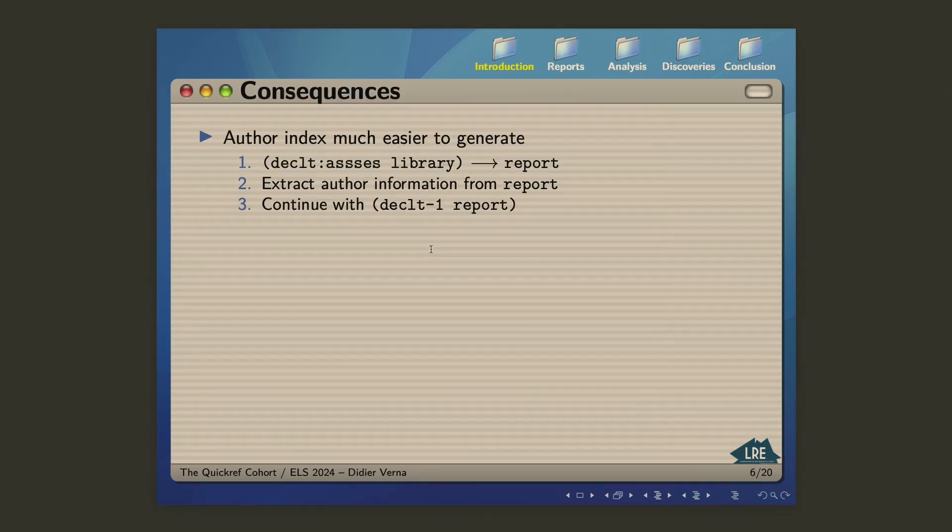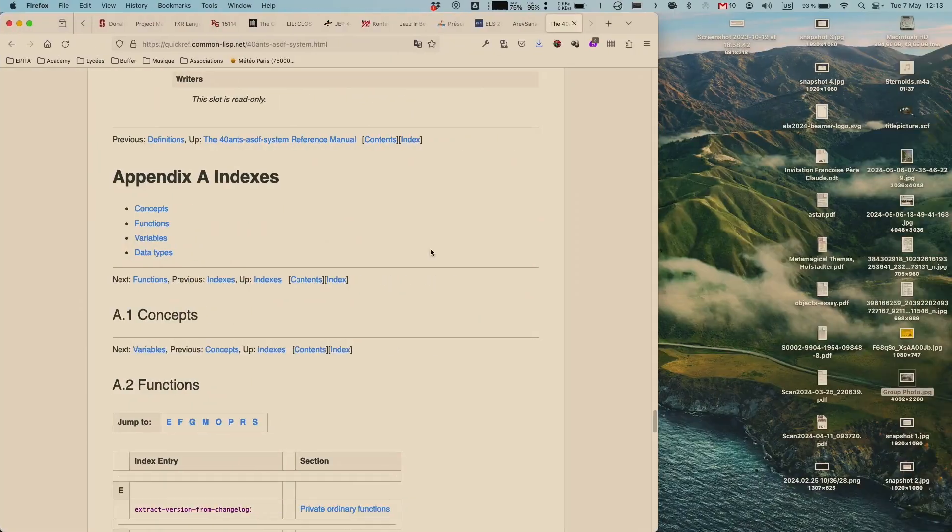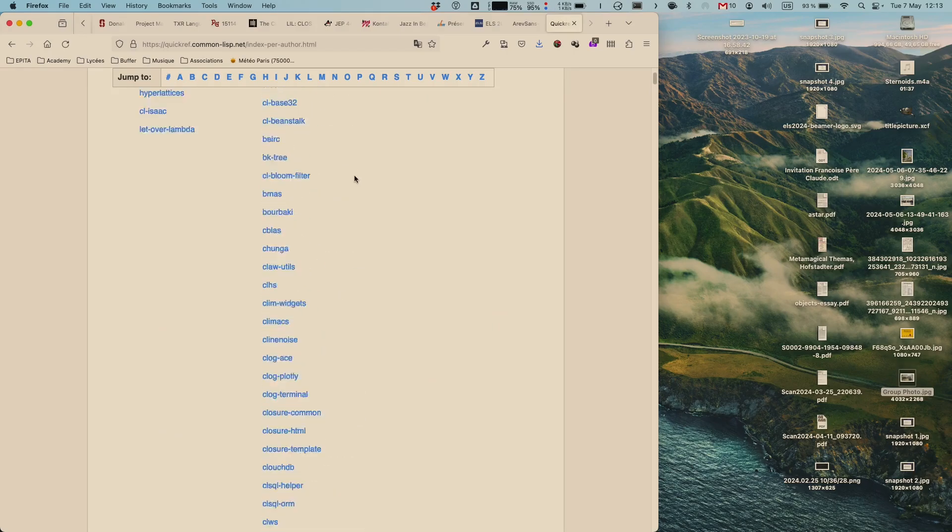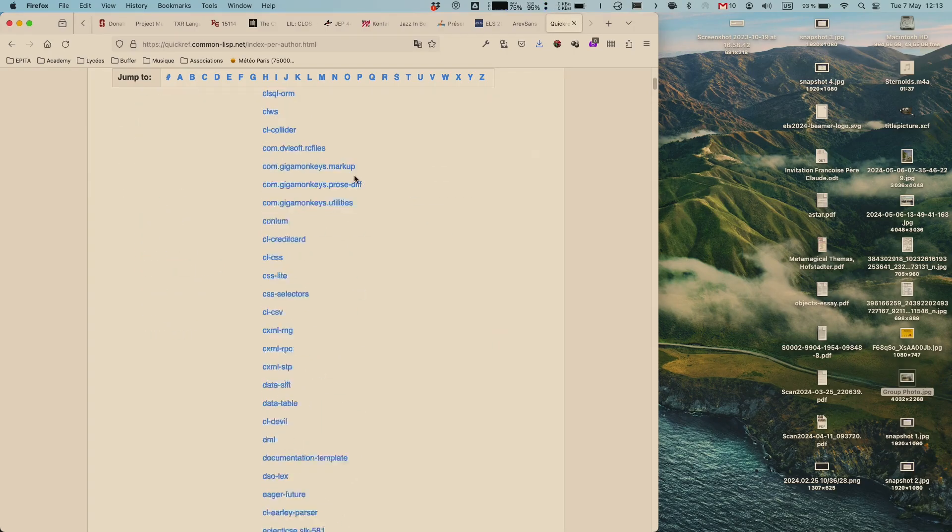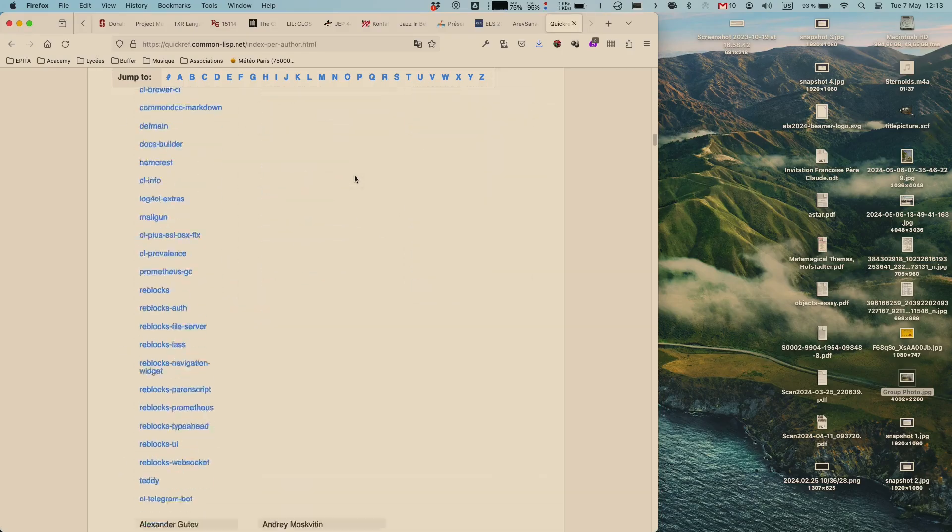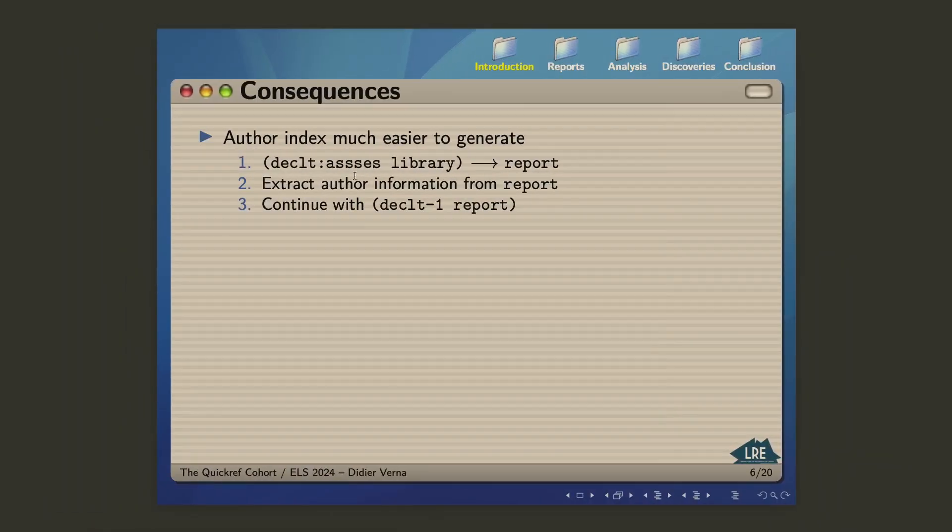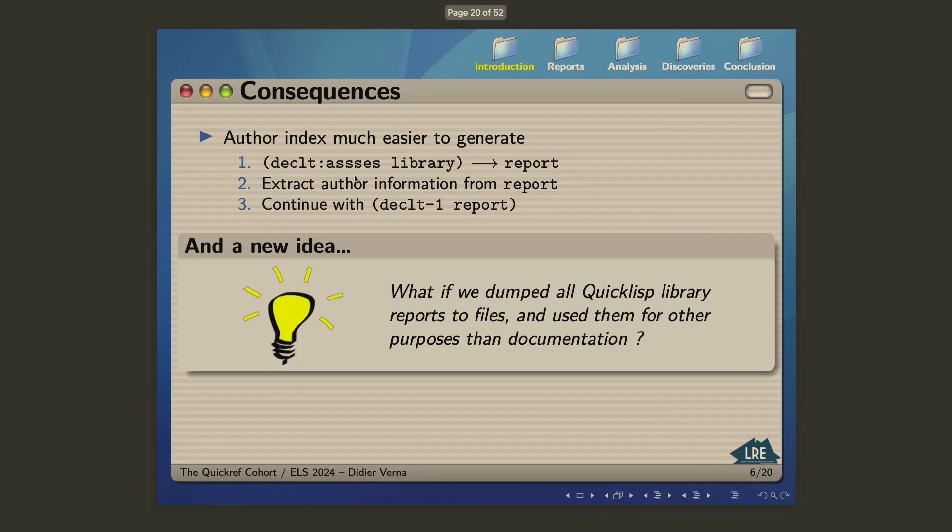Good consequences already. It's much easier for me to generate the quickref author index, which you have here for instance. There is a very prolific author here called unknown. But as you can see, all the reference manuals here are organized per author name. So it's obviously much easier for me to generate that index now, because instead of calling decklet as a monolithic engine, quickref calls the assessment function first, gets the report, extracts the author information in a single list image, and then just goes on with the rest of the processing.